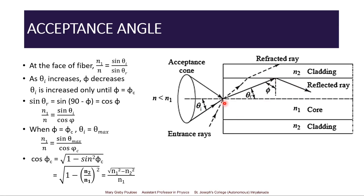At the face of the fiber, Snell's law gives n1/n = sin θi / sin θr. As the angle of incidence θi is increased, the angle of incidence on the core-cladding interface φ decreases. Hence θi can be increased only up to the value where φ becomes the critical angle. From the geometry of the triangle, θr = 90° − φ. Hence sin θr = sin(90° − φ) = cos φ. Snell's law becomes n1/n = sin θi / cos φ.